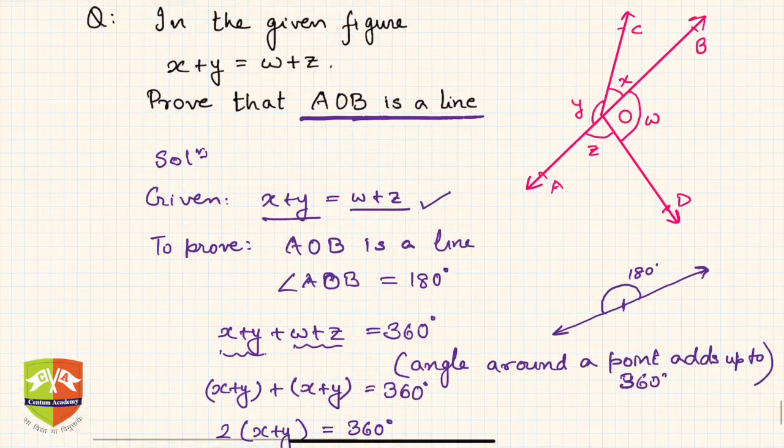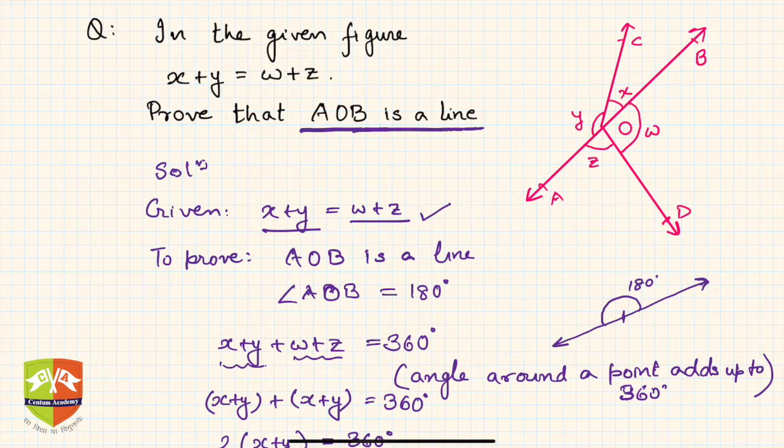This is how you have to solve this problem. The learning is that if you have to prove that something is a line, then you have to prove that if you pick any point on that line, the total angle made will be 180 degrees.